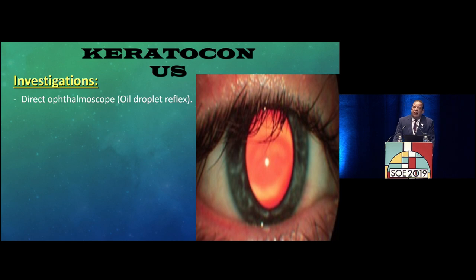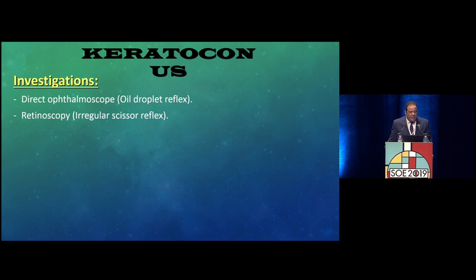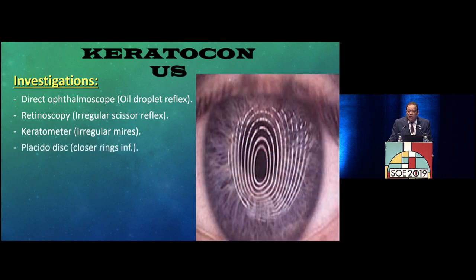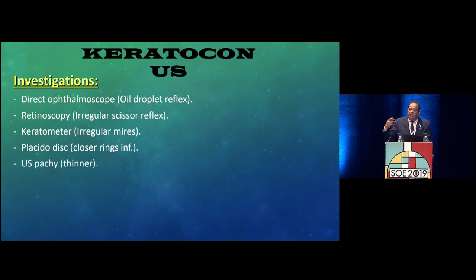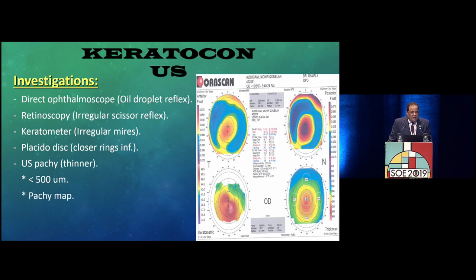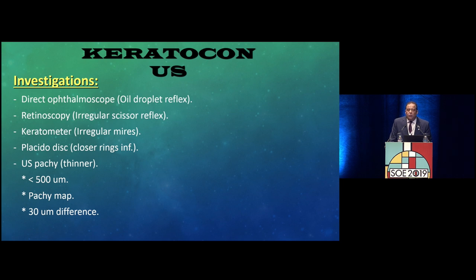Advances in investigations include the oil-droplet reflex from the retinoscope, scissoring reflex, irregular mires on keratometry, and closer rings inferiorly on Placido-disc topography. Corneal thickness is usually thinner than normal — often less than 500 micrometers — though some keratoconus patients have within-normal thickness. The pachymetry map typically shows a 30-micron difference between the superior and inferior portions of the affected area.